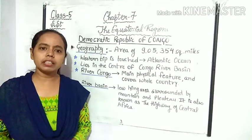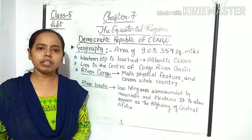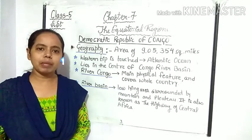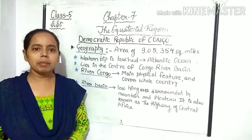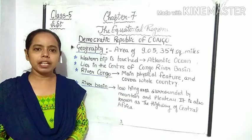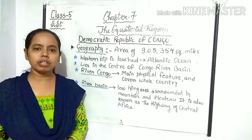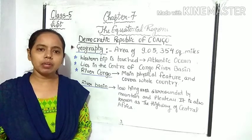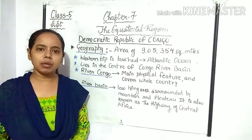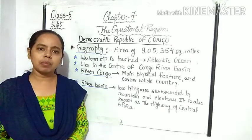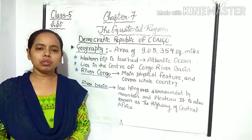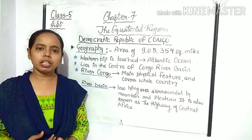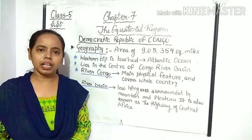This country lies in the center of the River Congo Basin. ये जो हमारा Democratic Republic of Congo है, ये Congo River के बेसिन के center में है। बेसिन क्या होता है? किसी भी नदी का जो किनारा होता है, उसे हम बेसिन बोलते हैं। तो जो Congo River का बेसिन है, उसके center में ही ये Democratic Republic of Congo बसा हुआ है।